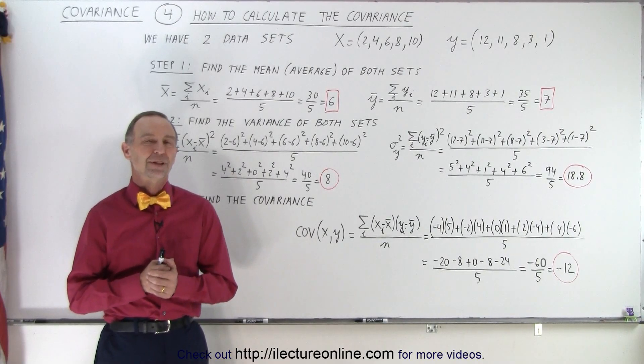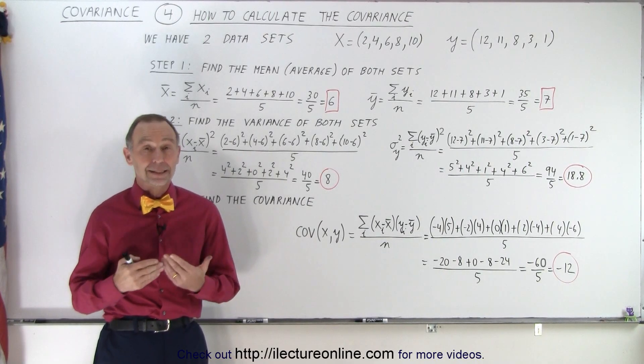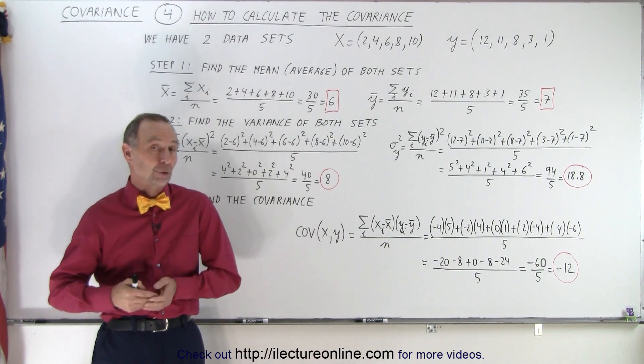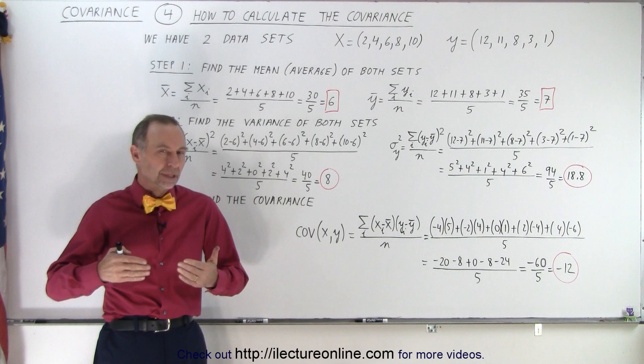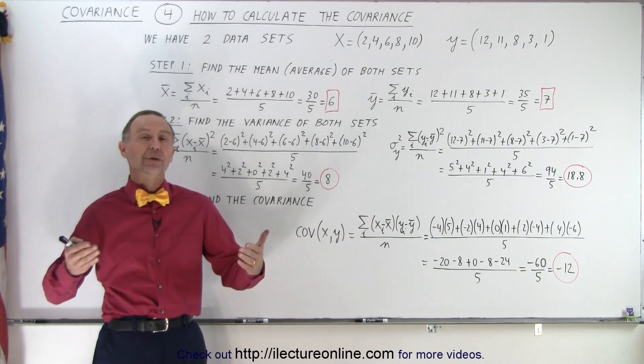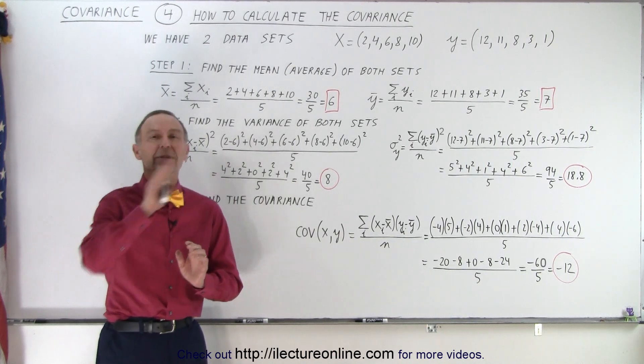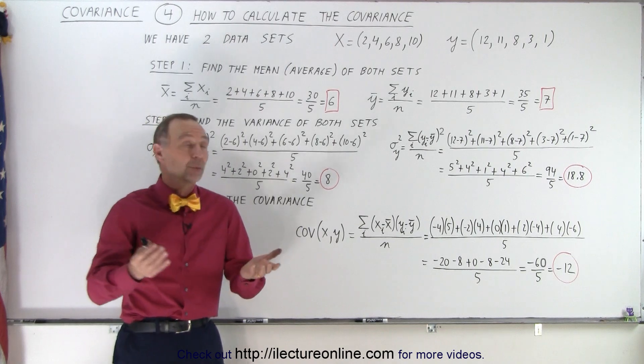Welcome to our lecture online. Let's take another look at how to calculate the covariance. To have the covariance, we need to have two datasets. Is it possible to have covariances between more than two datasets? Yes, there is, but we'll tackle that later. We just start with two datasets.